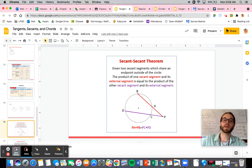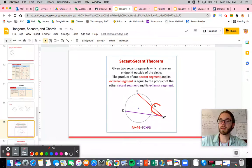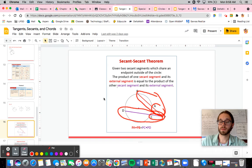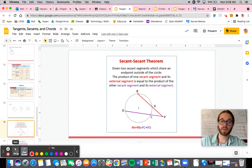The product of one secant segment and its external part are equal to the other times its external part. So what do I mean by that? That means if we take a look here, this part times the whole thing is equal to this part times the whole thing. That's how these are going to work.